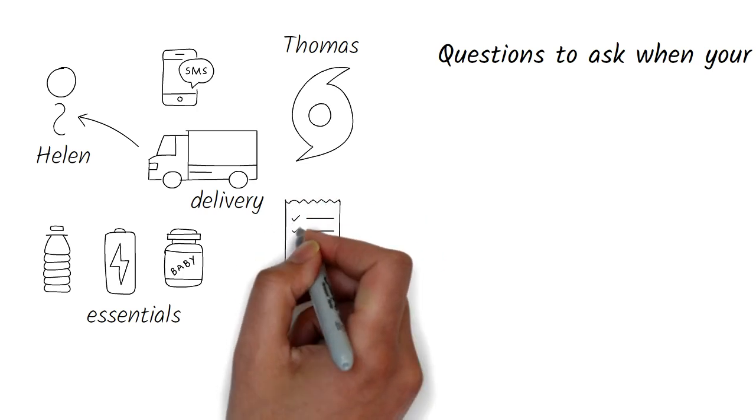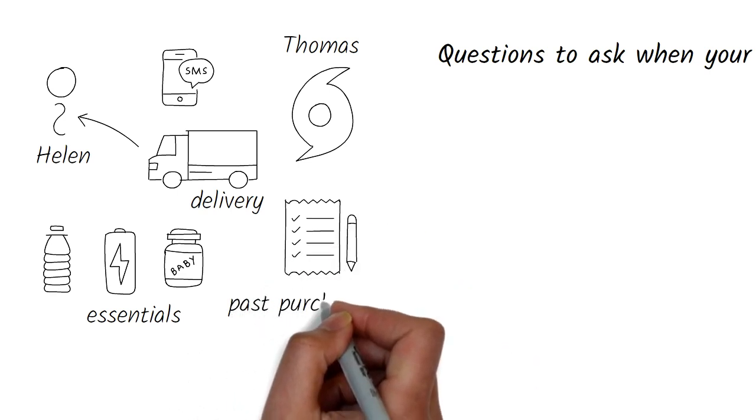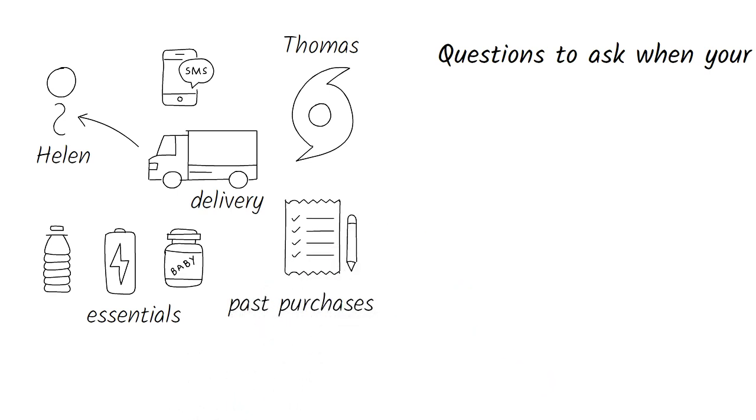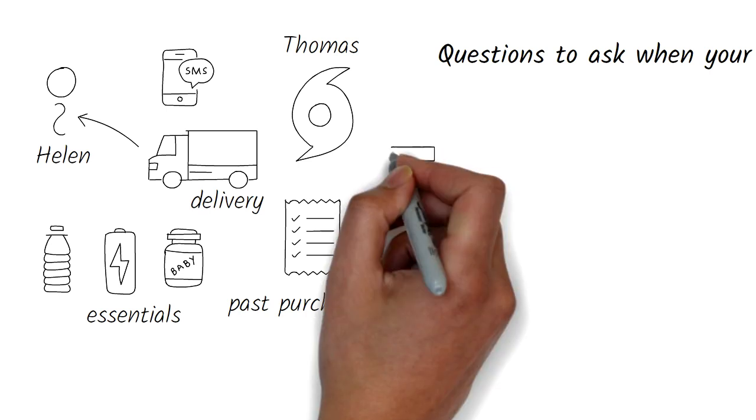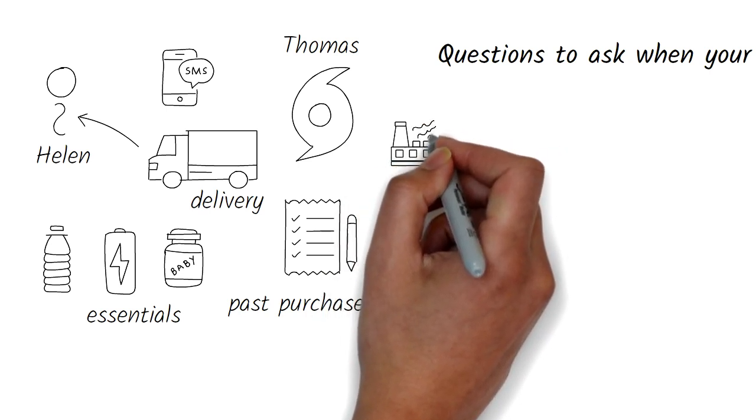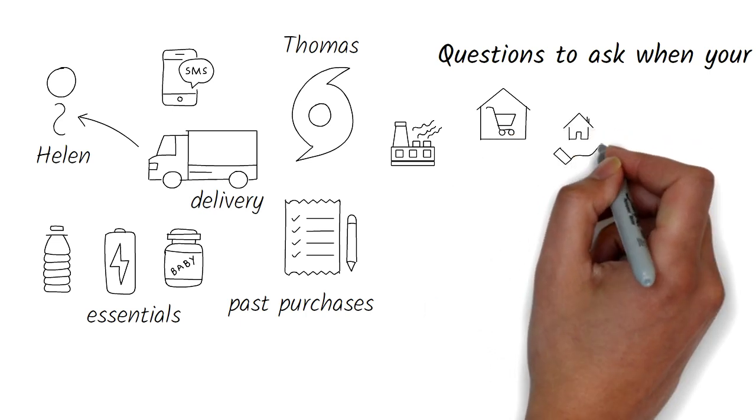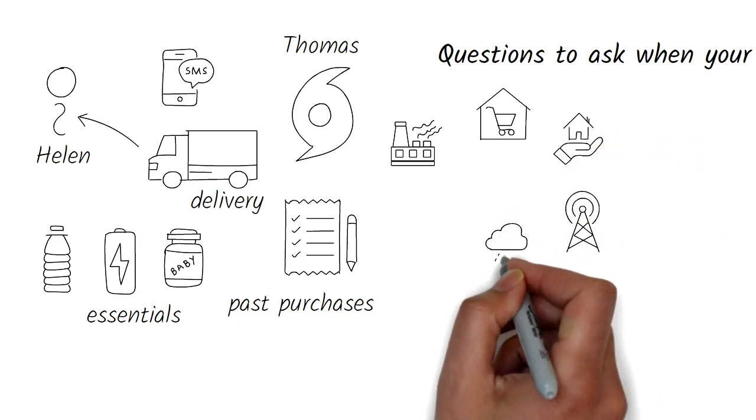To make this particular delivery happen, the manufacturer had some idea of Helen and her needs through the purchases she had made in the past. The manufacturer, the grocery store, the insurance agent, the communications company, the weather information company,